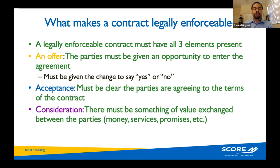If your contract is missing one of these three elements and you have to go to court, your contract may not hold up — meaning a judge may not find it enforceable. That means if you're losing money, you may not get your money back. If there is an obligation that the other side promised to you, they may get away with it because you don't have one of these three elements laid out in your contract.